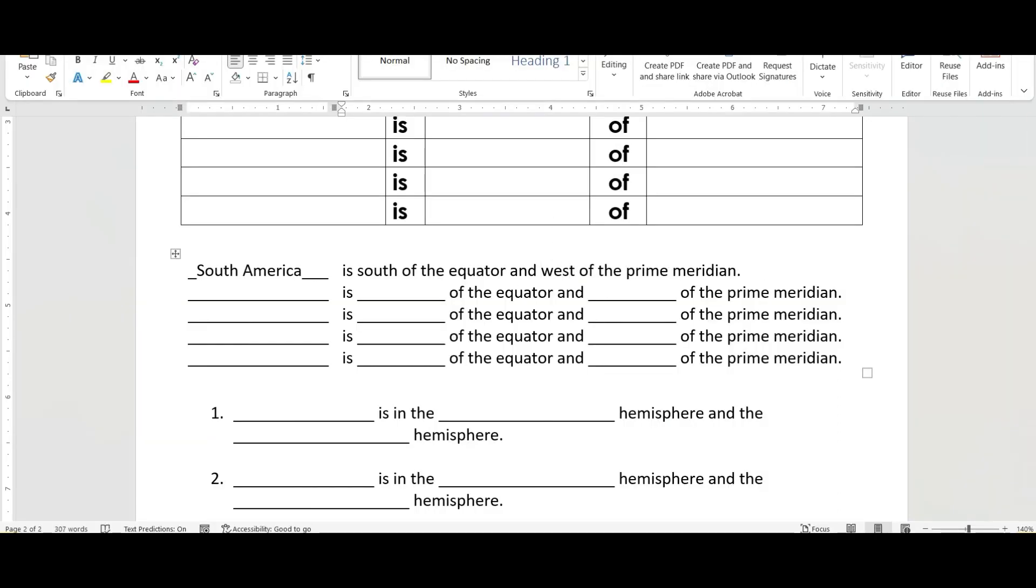So you'll put in here west of the prime meridian. And you'll do that one, two, three, four, five examples. Don't use South America and you'll fill those in so that they're true.